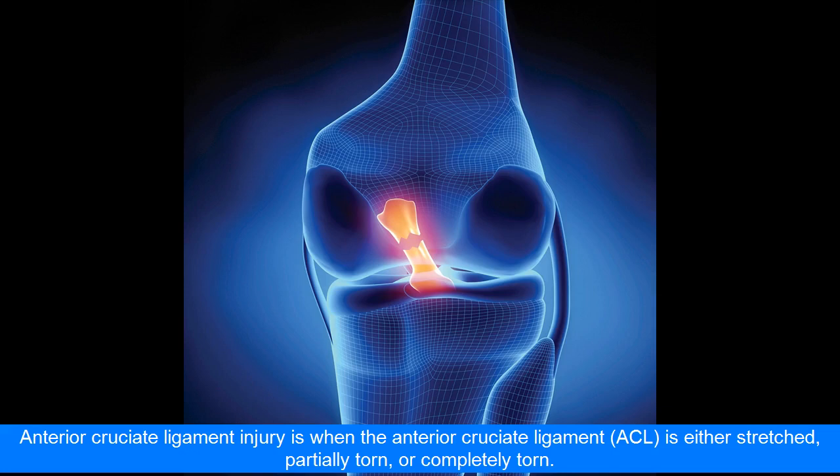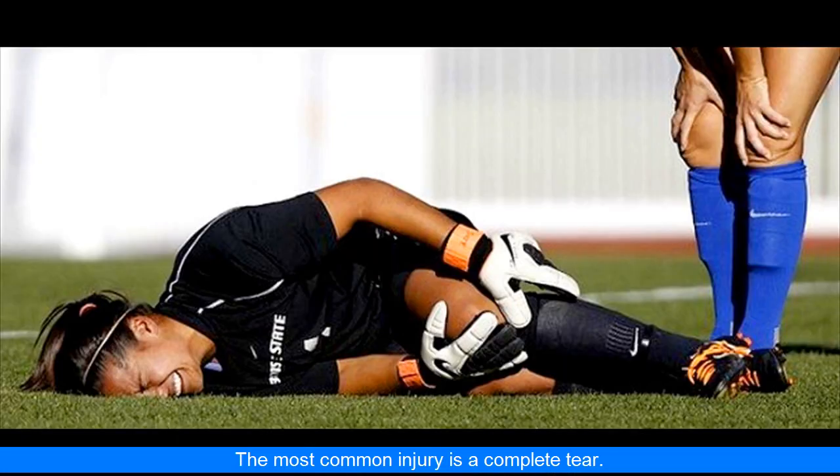Anterior cruciate ligament injury is when the anterior cruciate ligament is either stretched, partially torn, or completely torn. The most common injury is a complete tear.